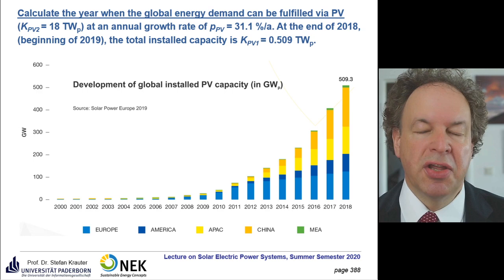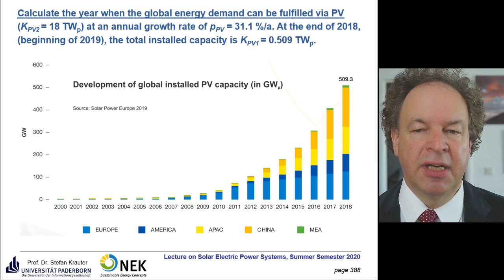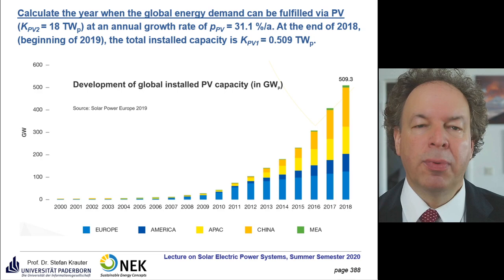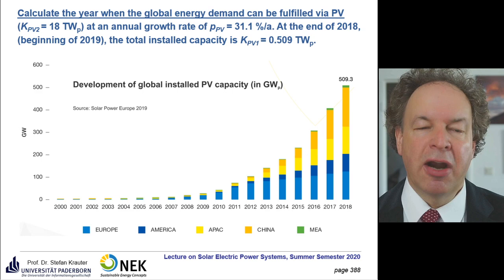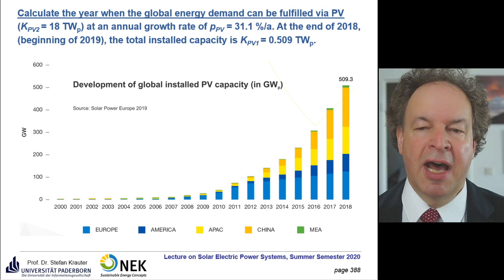This is extracted from the graph in the lecture. Now the next part of exercise 1 is to calculate the year when the global energy demand can be filled via photovoltaics. As you know from the very first lecture, it was calculated that we need about 18 terawatts under standard test conditions. We now know the annual growth rate is 31.1%, and the installed PV capacity at the end of 2018 is 509 gigawatts or 0.509 terawatts.